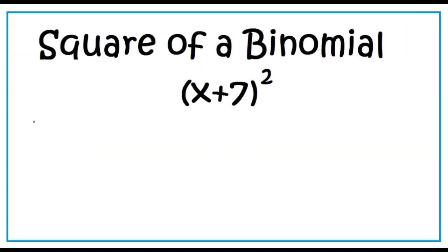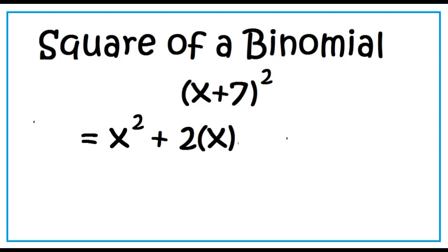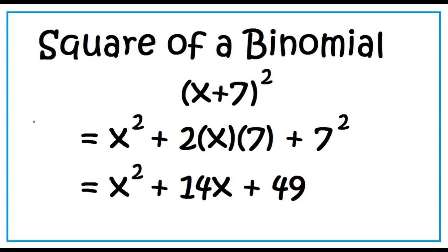Example: find the product of the square of the quantity x plus 7. The product is the square of the first term, x times x is x squared, plus twice the product of the first term and the second term, plus the square of the second term. Simplify: x squared plus 14x plus 49.